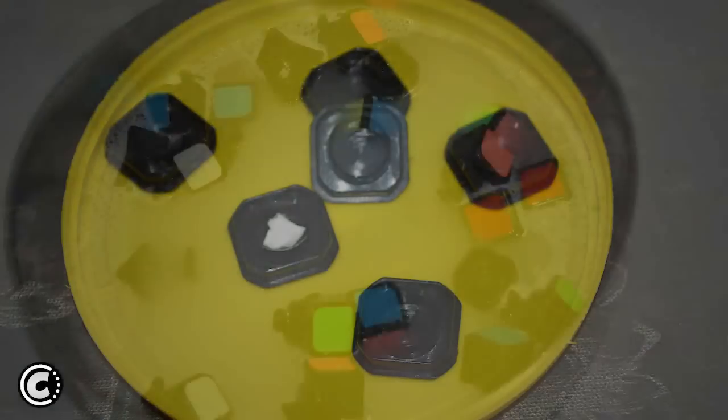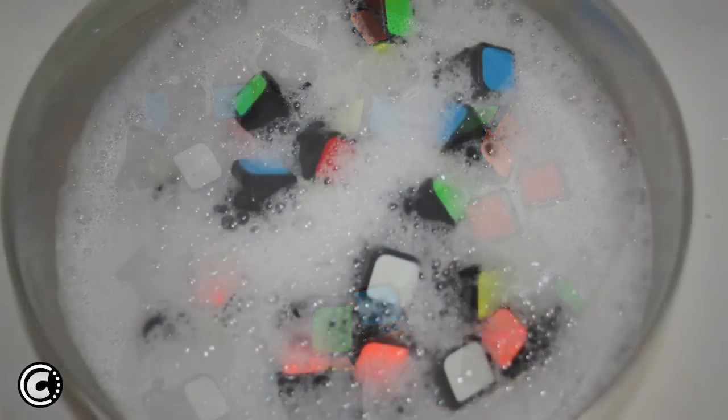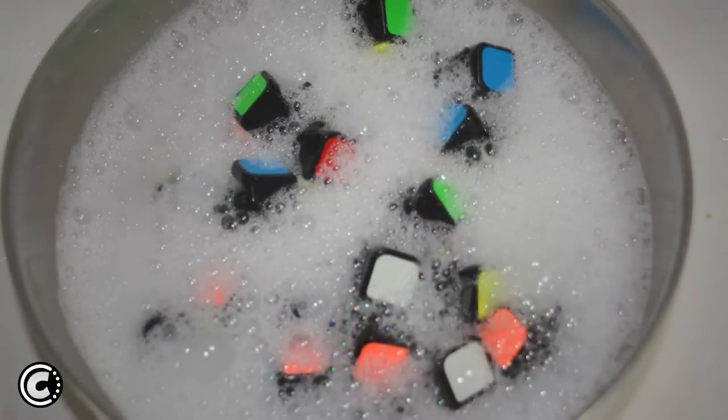Once I'm done disassembling the puzzle I just drop each and every piece. There should be 26. I drop each and every piece in the mixture apart from the screws and center caps. Now you dip your hands in the mixture and start to mix the soap water and the pieces together. I tend to let the pieces soak for a while like 2-3 minutes before I start washing them.